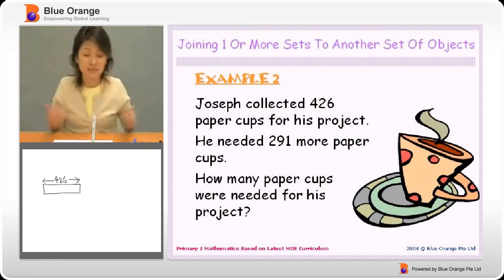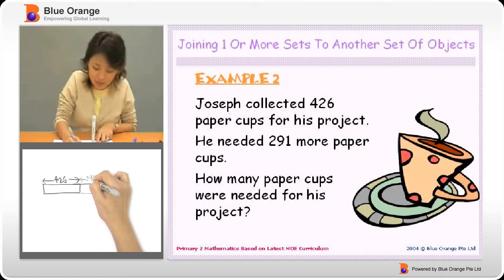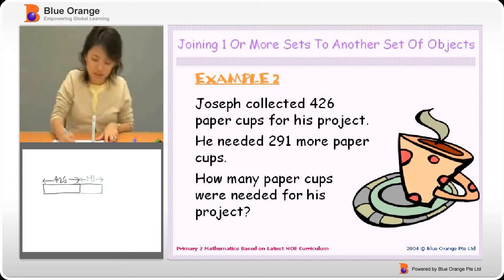Then the next part says he needed 291 more. This is not enough. He needs some more. So I'm going to draw some more. Draw how many more? 291. So how many paper cups does he need? From here to here, right? So everything here.